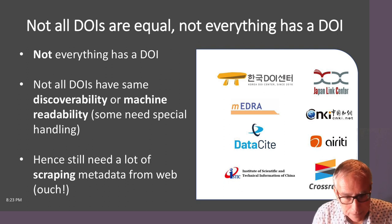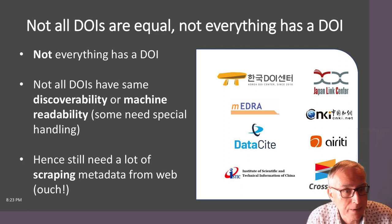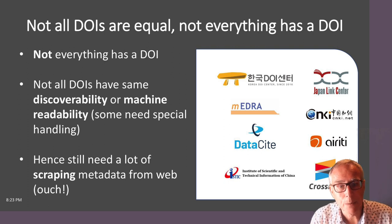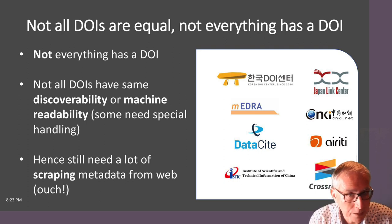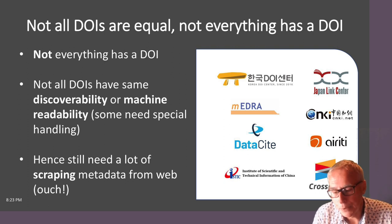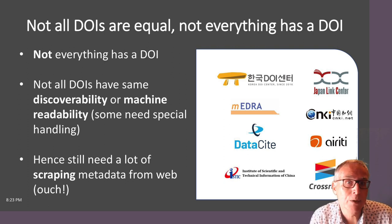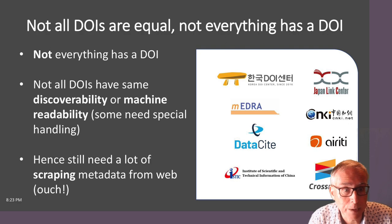DOIs are great, but not all DOIs are equal, and not everything has a DOI. Most publications we deal with have a CrossRef DOI, but there are lots of other places that issue DOIs — some based in particular countries, some focused on particular things; for example, DataCite is about data. So we do have issues with using DOIs, and there are also lots of publications which don't have DOIs. At the end of the day, we still have to go hunting through the web sometimes to get information on publications.